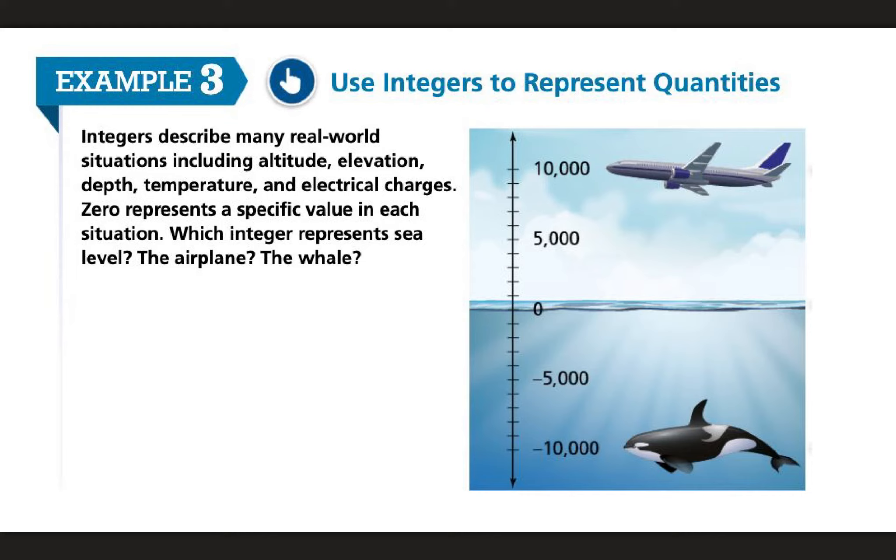Which integer represents sea level, the airplane, or the whale? So when we're thinking about an airplane flying in the sky, it's at 10,000 feet, right? It's really high up in the air. What are we talking about in these terms? Well, we can talk about altitude because a plane gets up there in altitude. We can also talk about elevation for an airplane. And then when we're thinking about the whale, how is it being described how far down it is? We know we're talking about depth. Okay, so how far down something is. So zero in this case, not how far down something is or how high something is. What would zero represent here? And in this case, we would think of it as sea level, right? Sea level is where the sea reaches the land. That's at zero. Anything below it is going to be below sea level. Anything above it is going to be above sea level. So zero in this case is sea level.